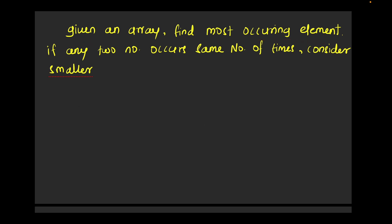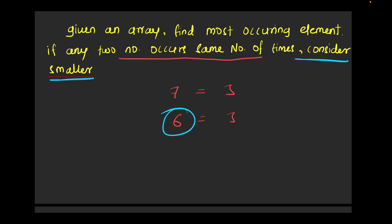If any two numbers occur the same number of times — for example, 7 has occurred three times and 6 has also occurred three times — then we consider the smaller number. So 6 would be our final answer in that case. We need to find which number has occurred the most, and if there's a tie, we pick the smallest.